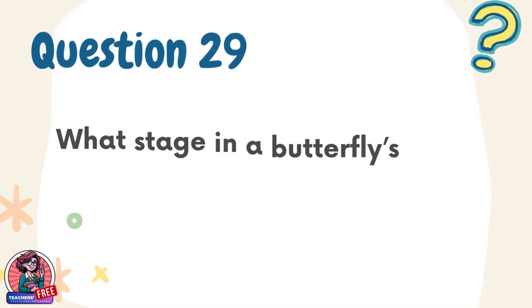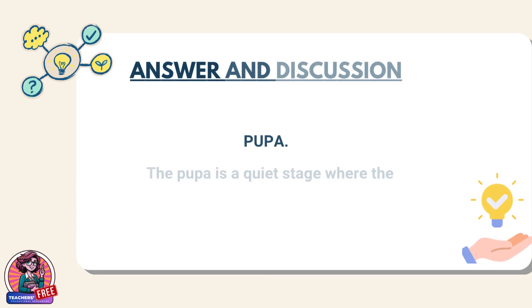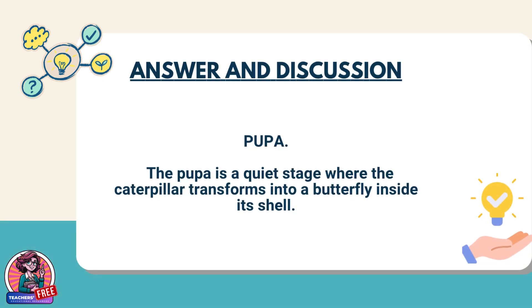Question 29. What stage in a butterfly's life is enclosed inside a chrysalis? Answer: Pupa. The pupa is a quiet stage where the caterpillar transforms into a butterfly inside its shell.